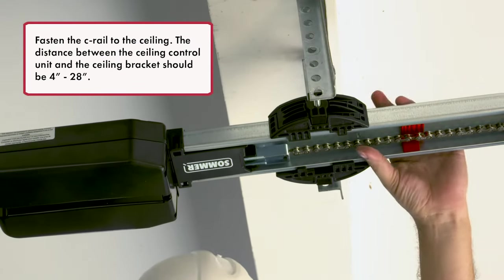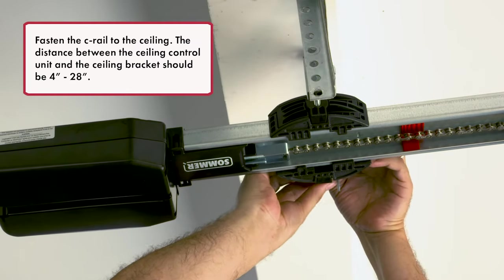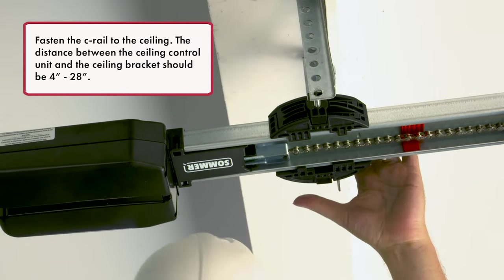Fasten the C-rail to the ceiling. The distance between the ceiling control unit and the ceiling bracket should be 4 to 28 inches.